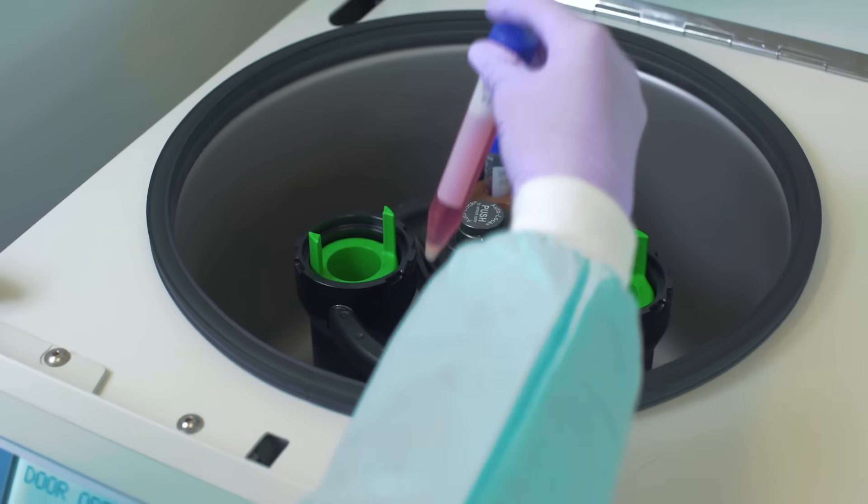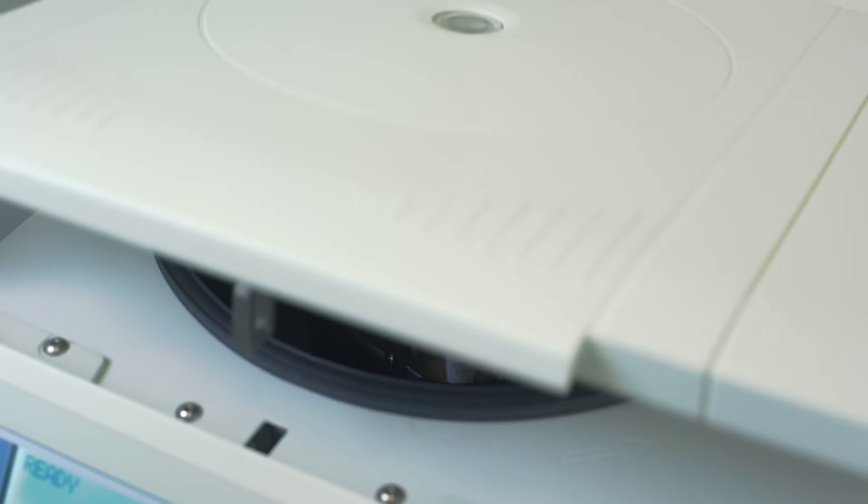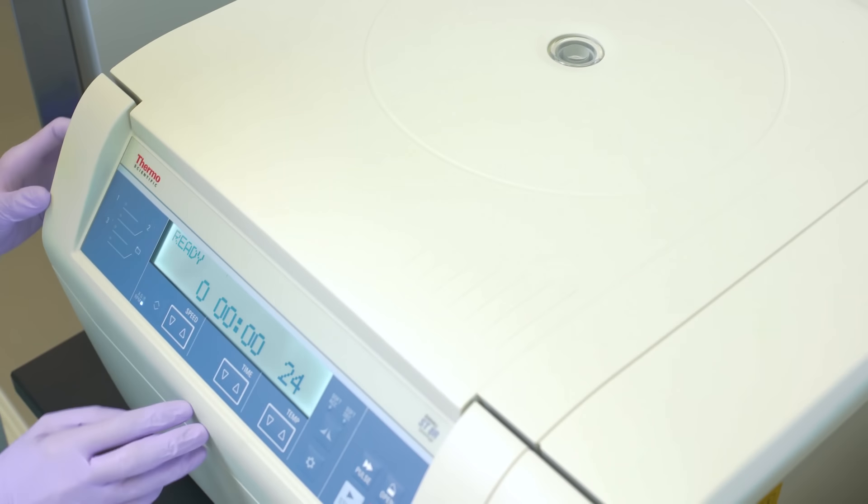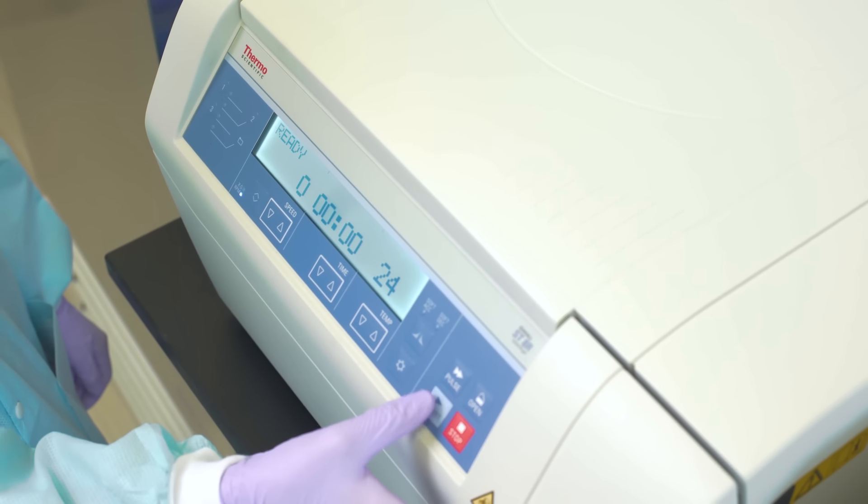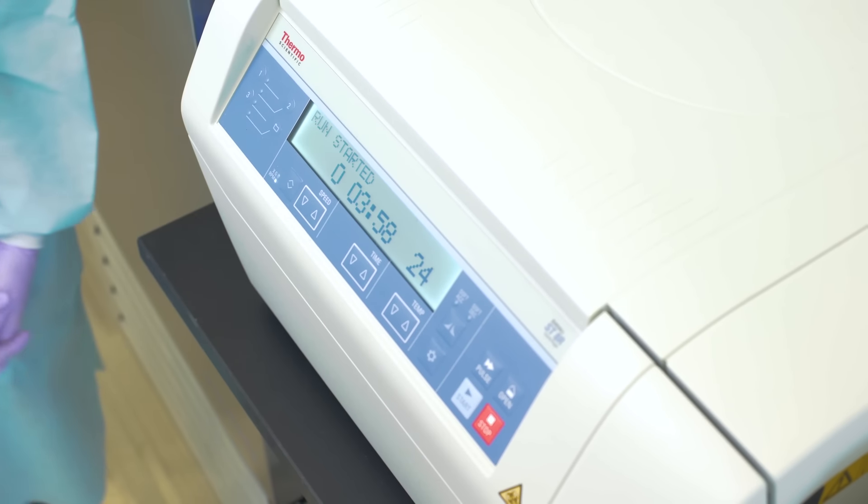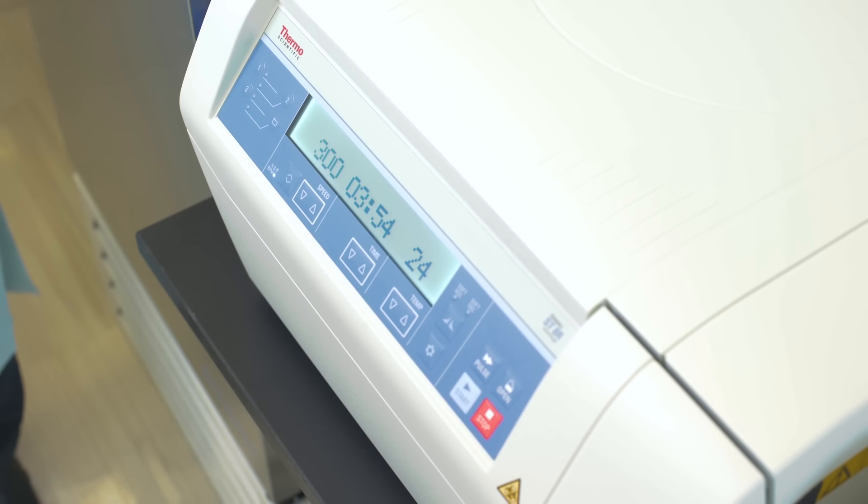Spinning the cells in the centrifuge allows removal of the freezing medium that contains DMSO. The speed and time may vary based on the cell type. Some cell lines are too delicate to spin, so this step could be skipped in certain cases. Follow the instruction of your laboratory manager if your cells are very delicate.